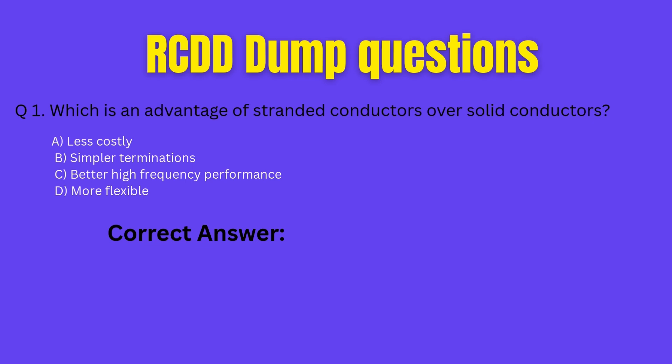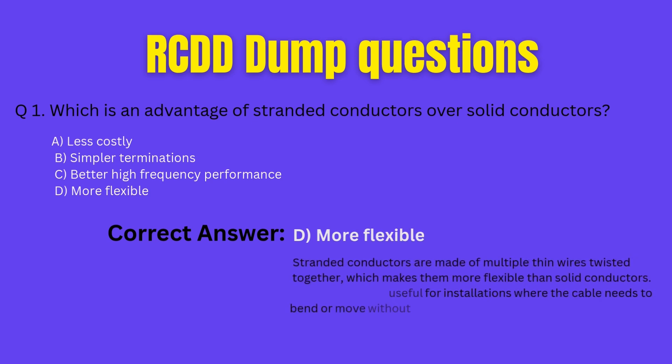Okay, pens down. Let's see the correct answer. Correct answer: D. More flexible. Explanation: stranded conductors are made of multiple thin wires twisted together, which makes them more flexible than solid conductors. This flexibility is useful for installations where the cable needs to bend or move without breaking.